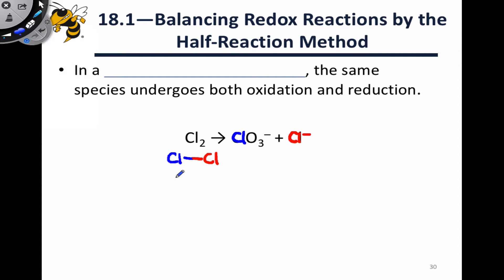So in the starting material, we have an oxidation state of zero for both the blue chlorine and the red chlorine, since this is the elemental form of chlorine. In the products, we've generated Cl-, which has an oxidation state of negative one. This is a monatomic ion.